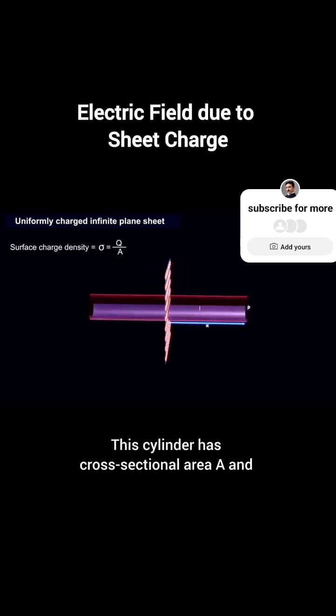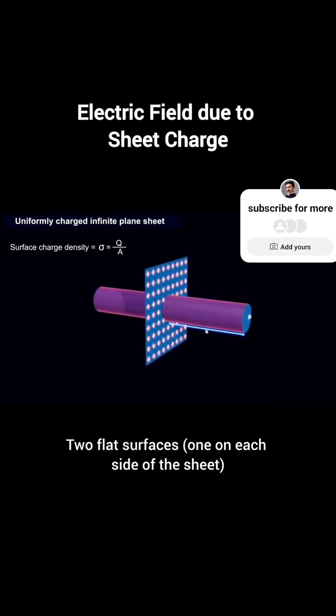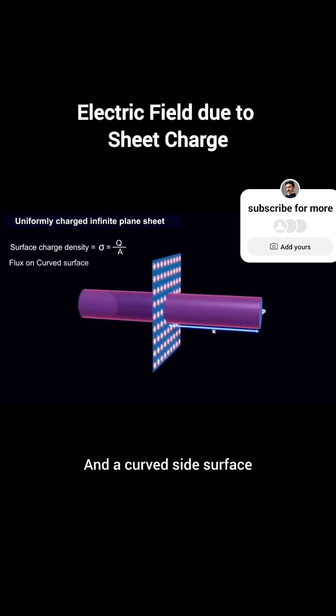This cylinder has cross-sectional area A, two flat surfaces, one on each side of the sheet, and a curved side surface.